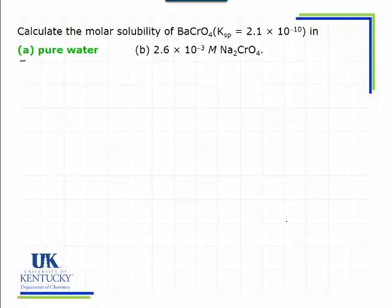In this problem, I'm going to calculate the molar solubility of the barium chromate compound. It gives me the Ksp value here, so we know that this is an insoluble salt, and when we say insoluble, that doesn't mean that none of it dissolves.